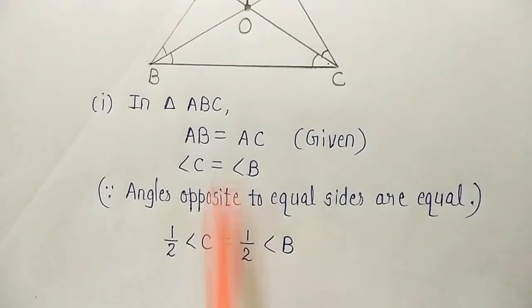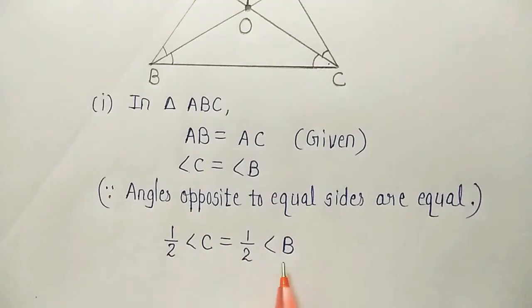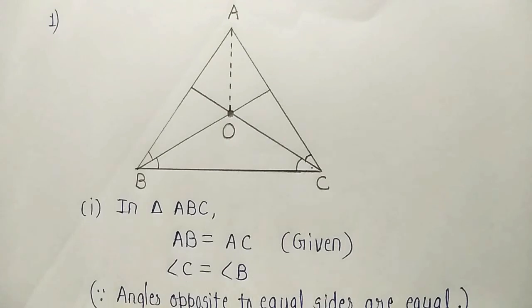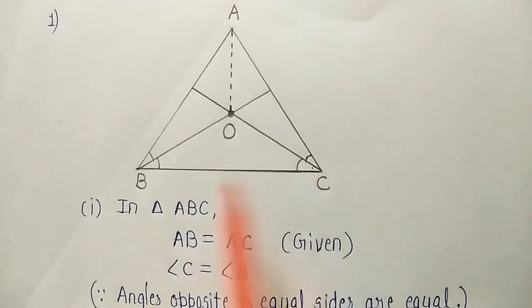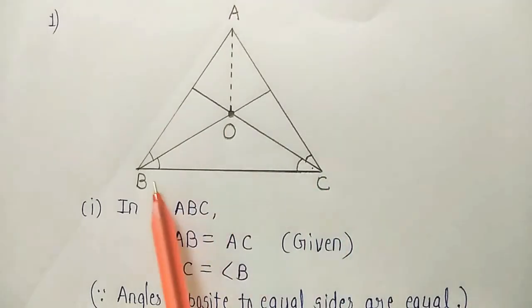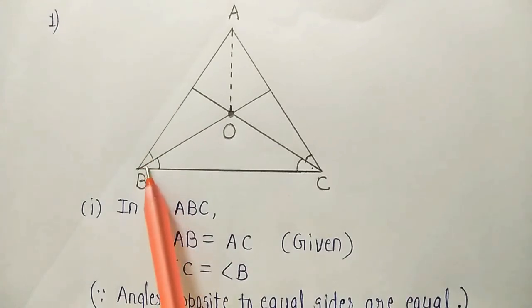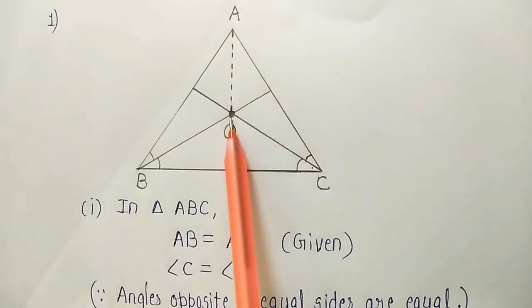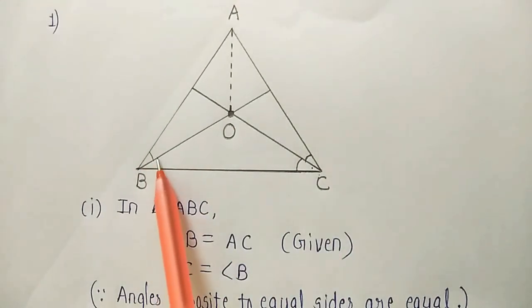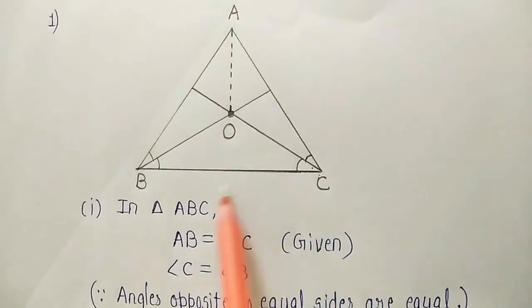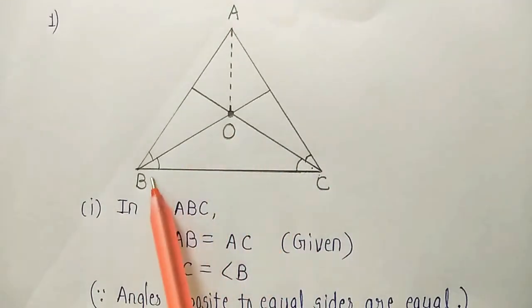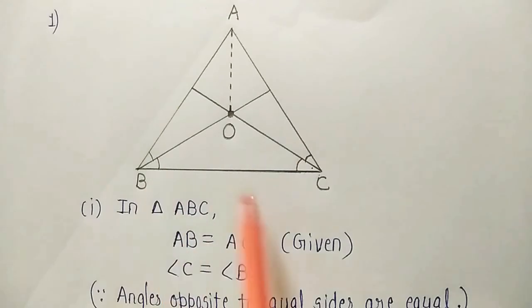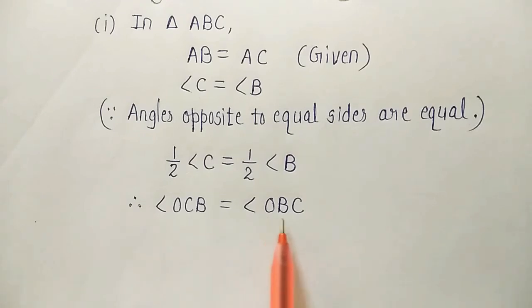If two angles are equal, their half angles will also be equal. Now refer to the figure. This is angle C — what will be half of angle C? It will be angle OCB. And this is angle B — what will be half of angle B? It will be angle OBC. This is the full angle B and this is half of it. So in place of half of angle C we write angle OCB, and in place of half of angle B we write angle OBC. They both will be equal.